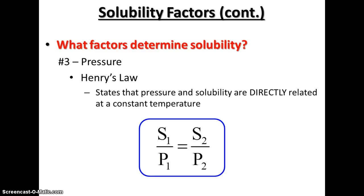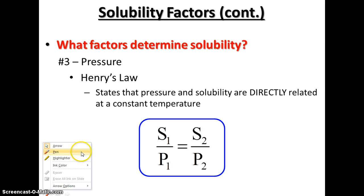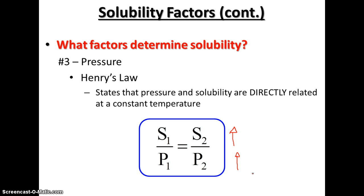With pressure, we have an equation called Henry's Law. It states that pressure and solubility are directly related at a constant temperature. When temperature remains the same, if we increase the pressure, the solubility will increase. If we decrease the pressure — such as opening a pop can — the solubility is going to decrease. The equation is S1 over P1 equals S2 over P2.